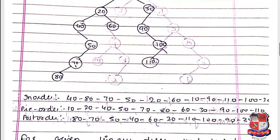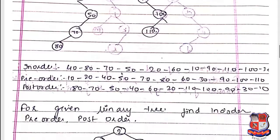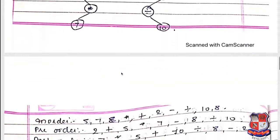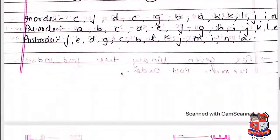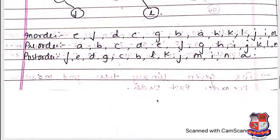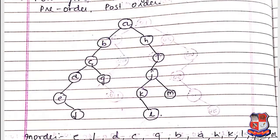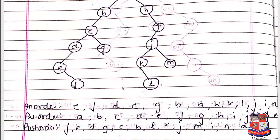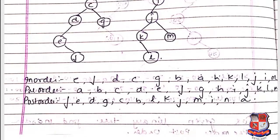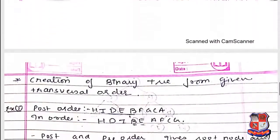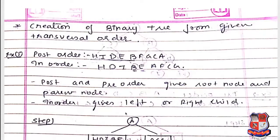Here is another example for practice. If you want more practice, consider a binary tree and apply the pre-order, post-order, and in-order rules. The creation of a binary tree from a given traversal order is our next concept.